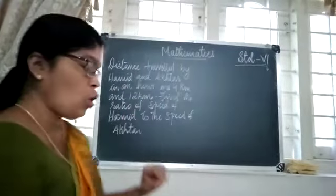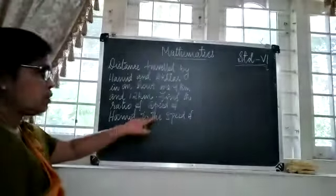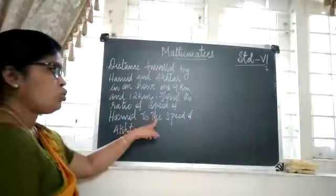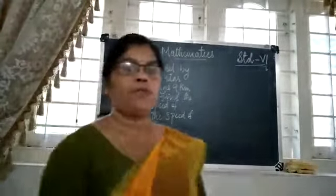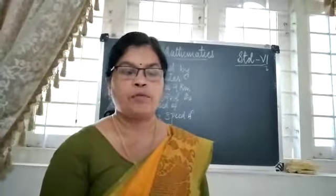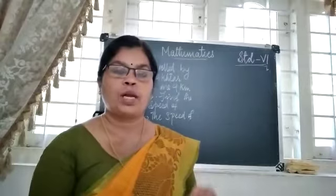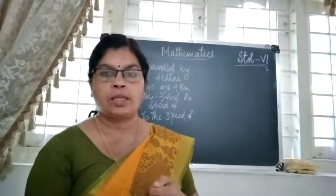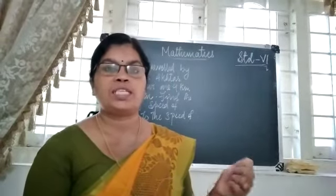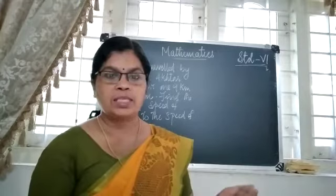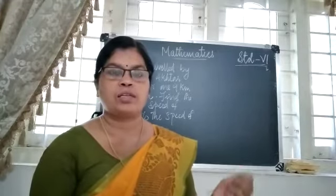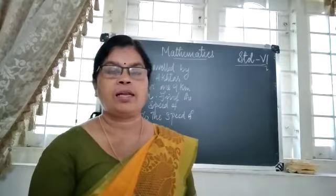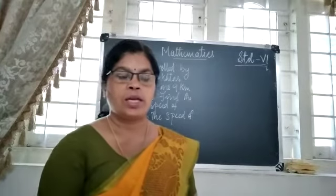We have to find the ratio of the speed of Hamid to the speed of Aftar. Whose speed is asked first? Hamid. So we have to write the speed of Hamid first, then write the speed of Aftar.